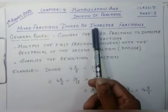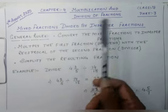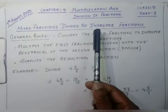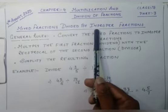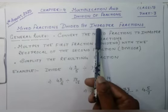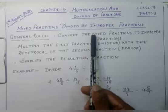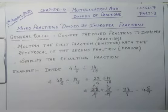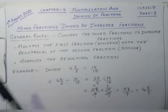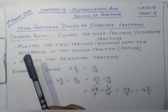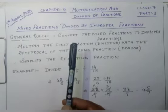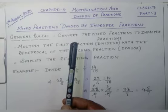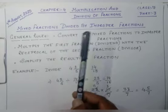First of all, the question arises: what is an improper fraction? A fraction whose numerator is greater than or equal to the denominator is called an improper fraction. Now there are some general rules that we have to keep in mind to divide a mixed fraction by an improper fraction.